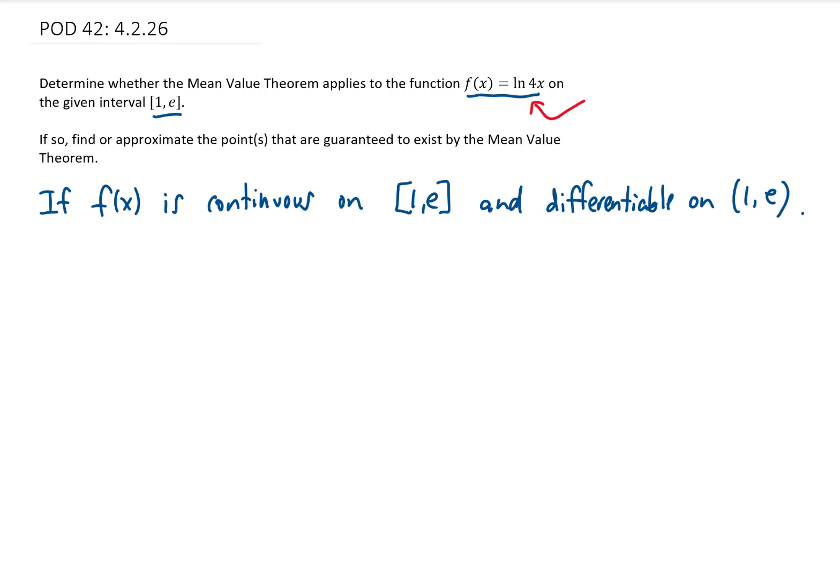The given function is a natural log, and a natural log function is discontinuous where its argument equals 0, and it doesn't exist when x is less than or equal to 0. But that's okay because our closed interval goes from 1 to e.